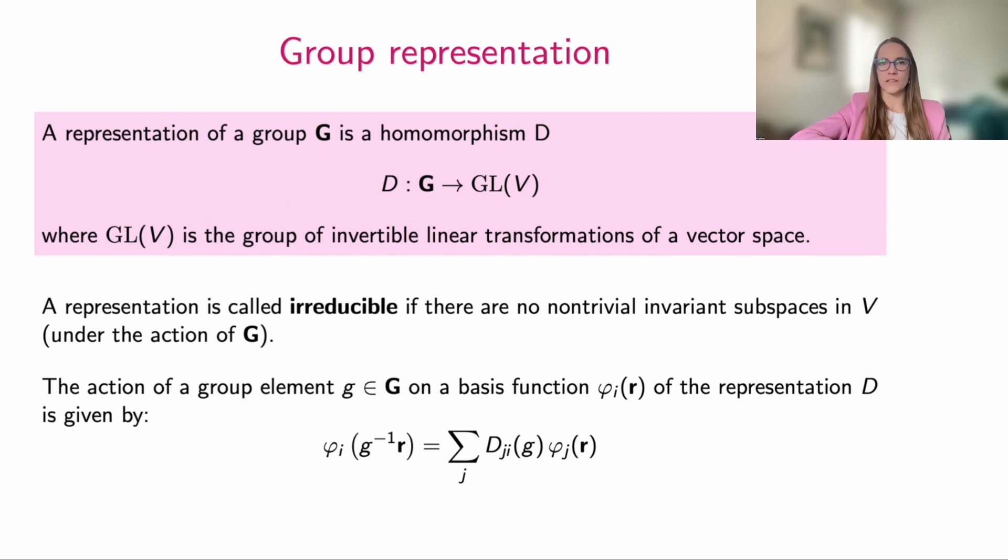A representation is called irreducible if the space V contains no nontrivial invariant subspaces. In other words, one cannot further reduce the matrices to block diagonal form. The action of a group element on a basis function is written like this, where d_ji is the matrix of the representation and phi is a basis function included in our row. Notice that we use rows instead of columns precisely to match the group multiplication table properly.